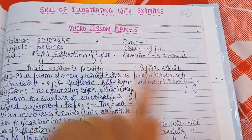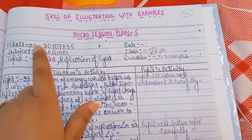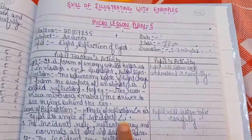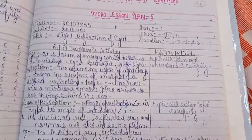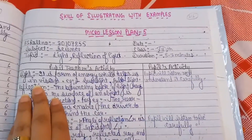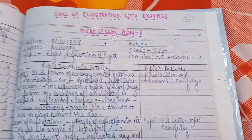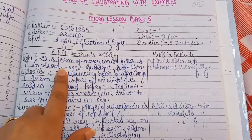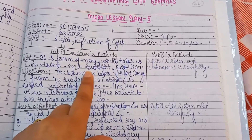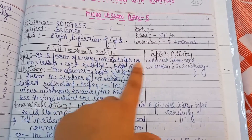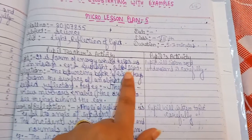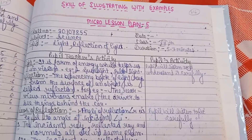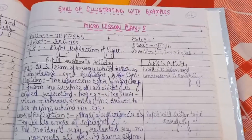The topic was light reflection. The lesson plan includes the subject, topic, date, class, and duration — that will be two minutes. The difference in this topic is that we will explain with examples. We just have to include examples; the rest remains the same.